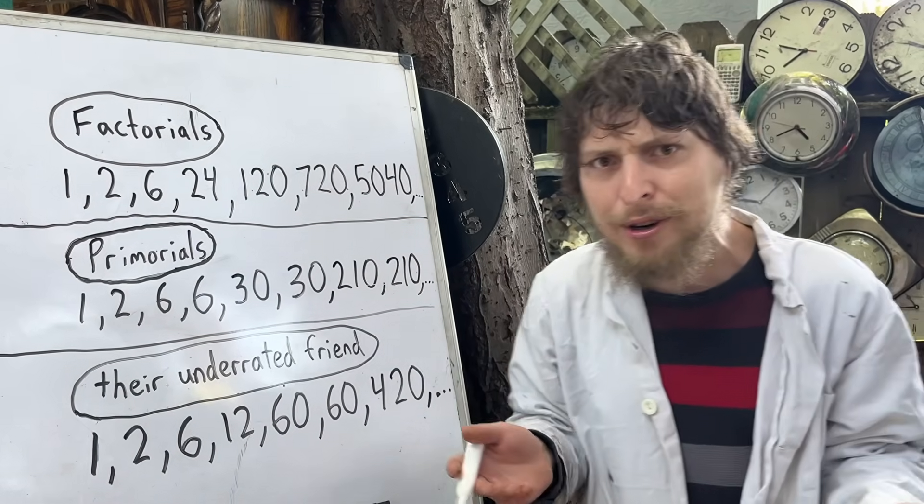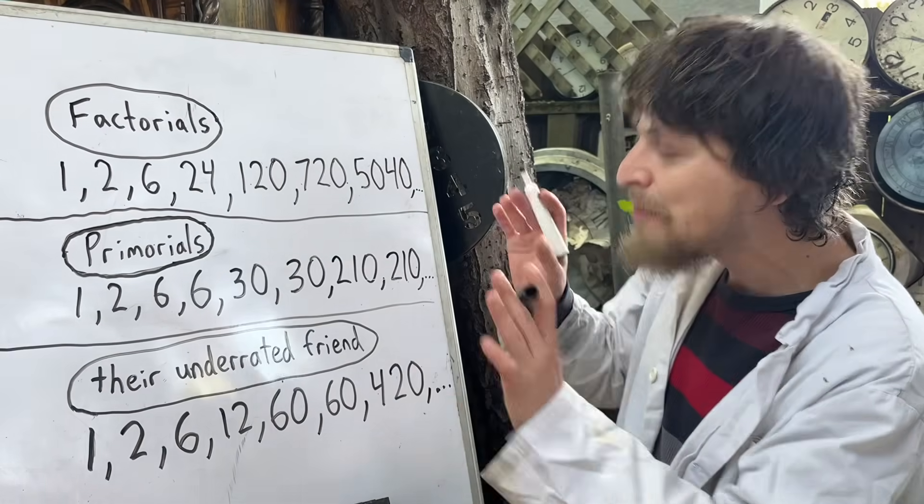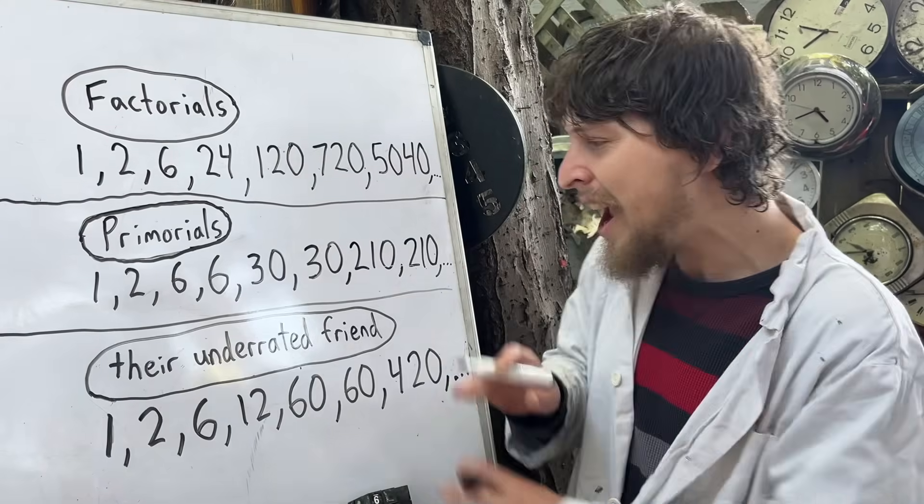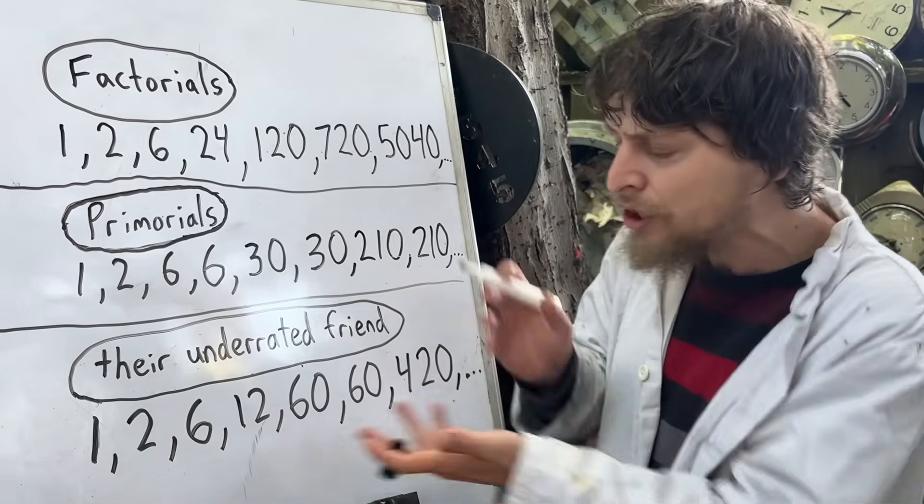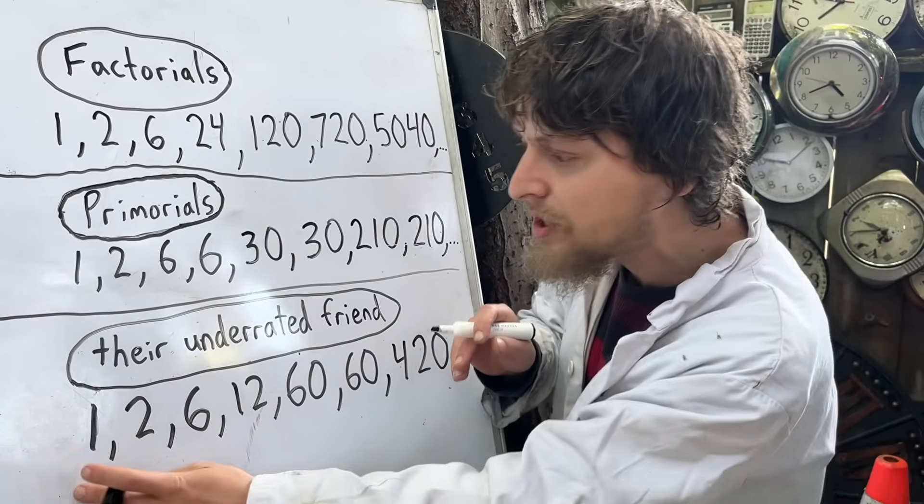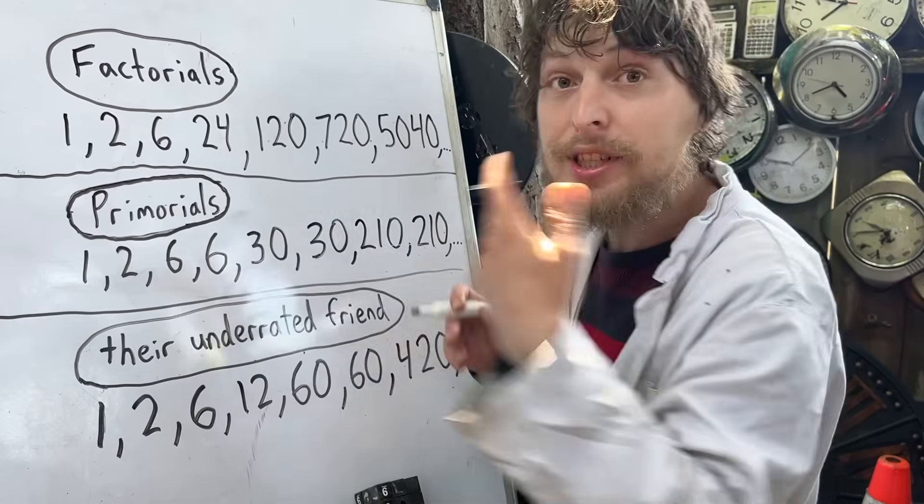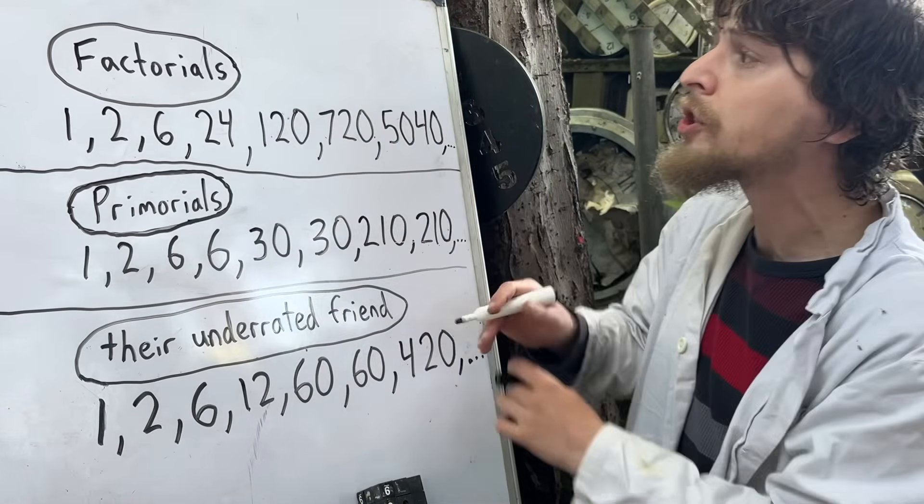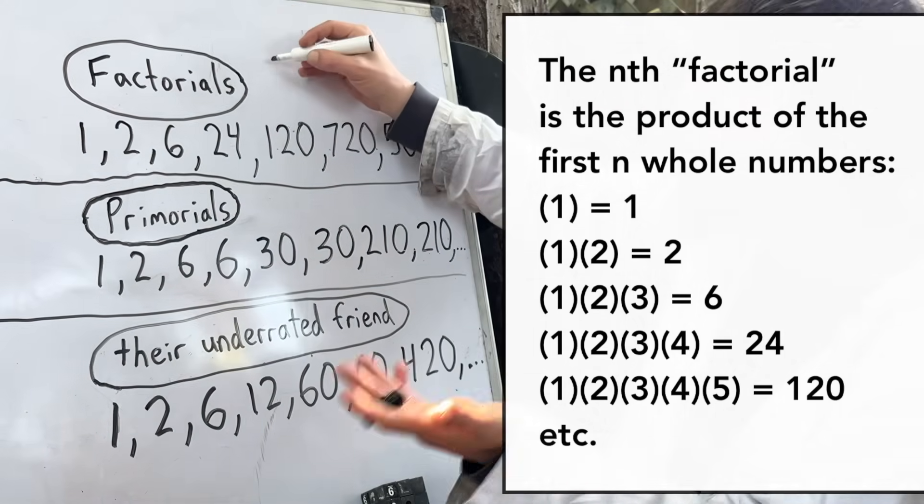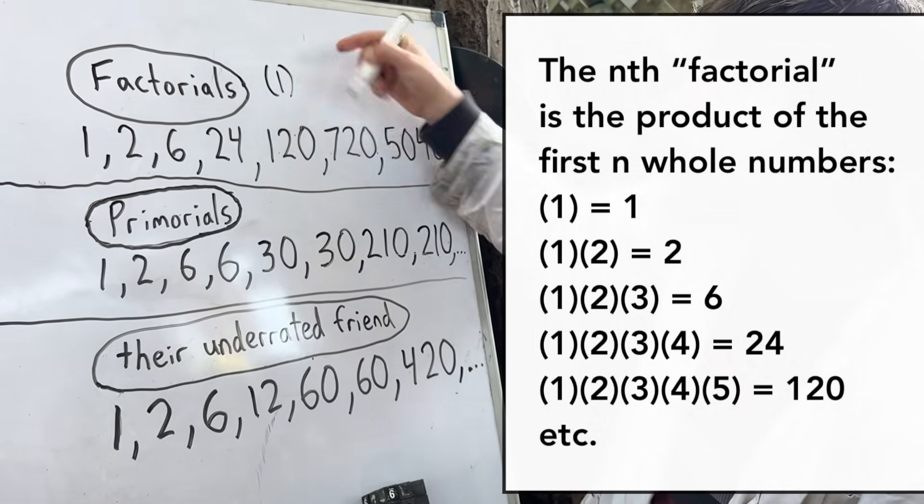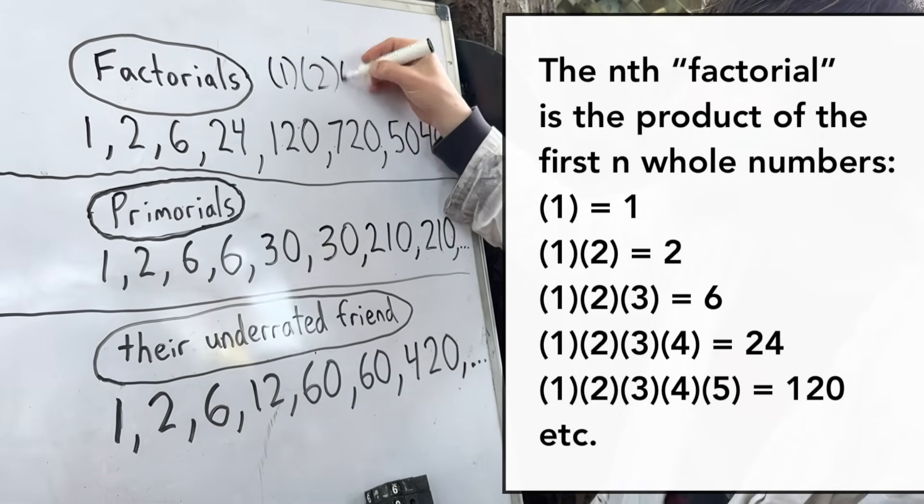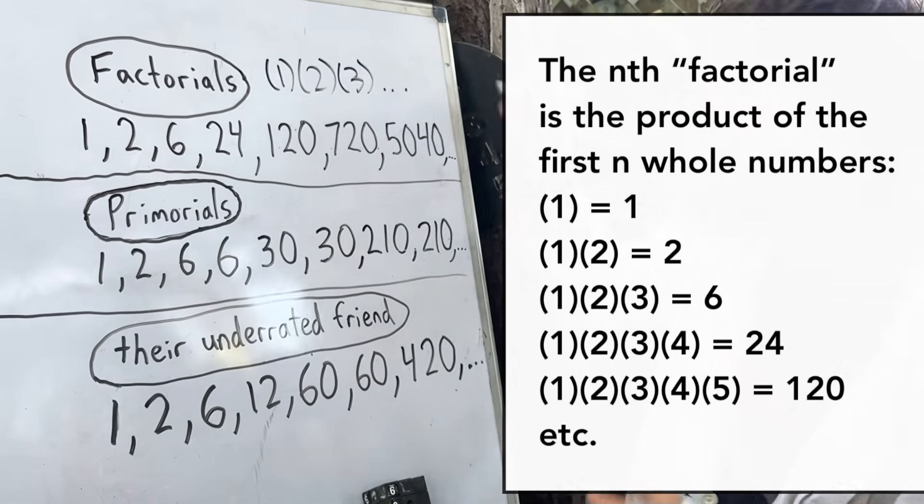That one should have had some other name, but in any case, this sequence which doesn't even have a common classic nickname, just a mathematical way to describe, does start similarly to these other sequences. The factorials, where you multiply all of the whole numbers up to some point, so for example, 1, and then 1 times 2, 1 times 2 times 3, and so on.